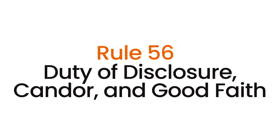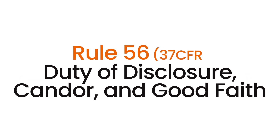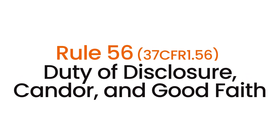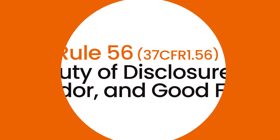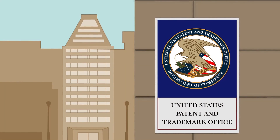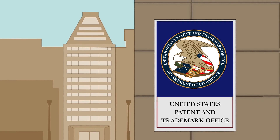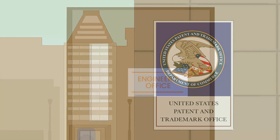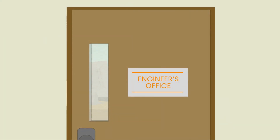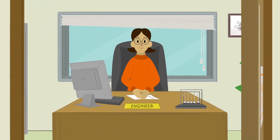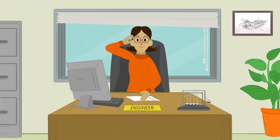This duty is based on a specific United States Patent and Trademark Office rule known as Rule 56, as well as various court decisions. Rule 56 requires that anyone involved in the process of filing and prosecuting a U.S. patent application disclose to the USPTO all non-cumulative information known to be material to the patentability of the claims in that application.